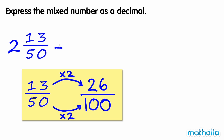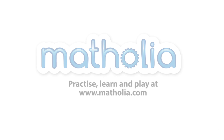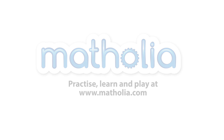So 2 and 13 fiftieths is equal to 2 and 26 hundredths, which is equal to 2.26.